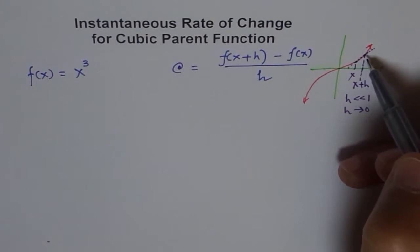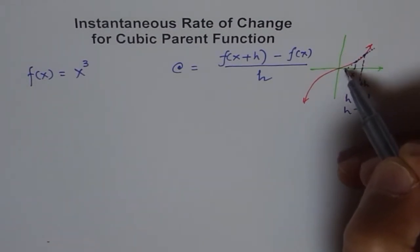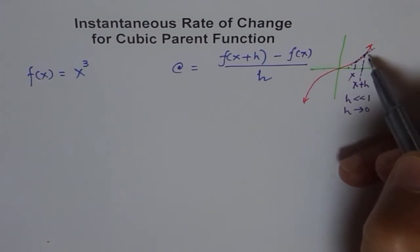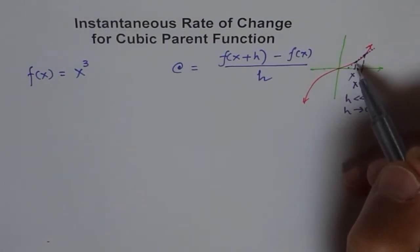But as I bring h very close to x, the two points almost join together. Then you will have a tangent at this point which will touch the graph only at one point. That's when the tangent slope gives you instantaneous rate of change.